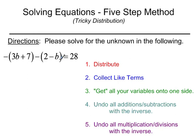So there's kind of two ways you could approach this problem here. It says in the directions, please solve for the unknown in the following. First off, I want to give this a good read. Some kids struggle actually reading it. So, what it says is the opposite of the quantity 3b plus 7 minus the quantity 2 minus b equals 28.